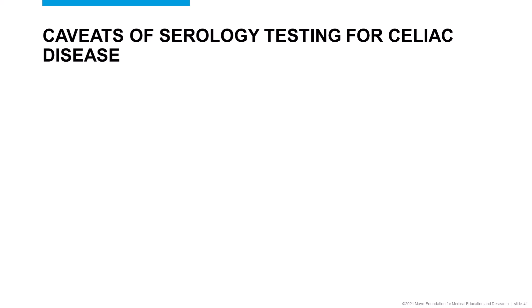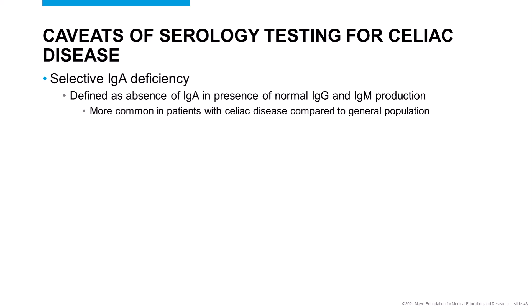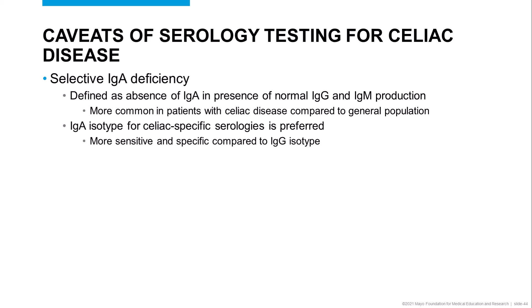Although serologic testing is important in establishing a diagnosis of celiac disease, we must appreciate its limitations. One issue is selective IgA deficiency, defined as the absence of detectable IgA in the presence of normal IgG and IgM production. Although relatively rare, it is more common in patients with celiac disease compared with the general population. In celiac diagnostic testing, the IgA isotypes are more sensitive and specific compared to the IgG isotypes, which is why IgA isotype antibodies are preferred. However, for patients with selective IgA deficiency, testing for the IgG isotype antibodies is necessary.